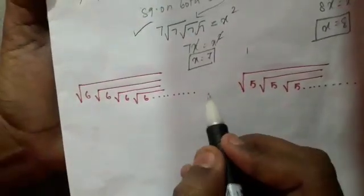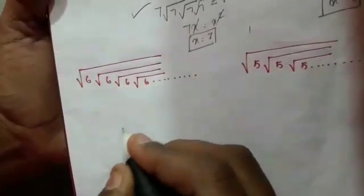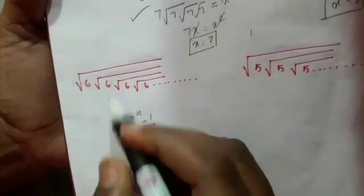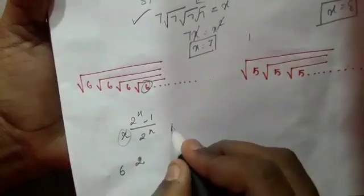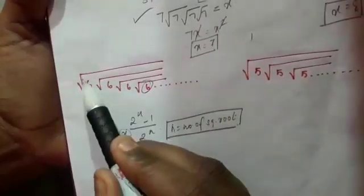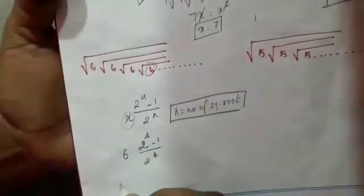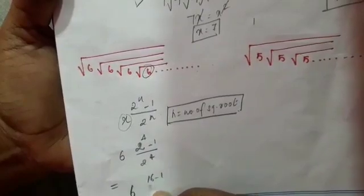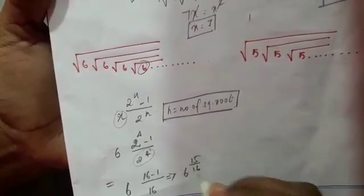Next, now we have the formula — this is the shortcut. The formula is x to the power of (2^n minus 1) divided by 2^n. Here x equals 6 and the number of square roots is 1, 2, 3, 4 so n equals 4. That gives 2 to the power 4 is 16, so the answer is 6 to the power of 15 over 16.